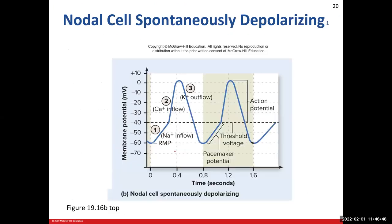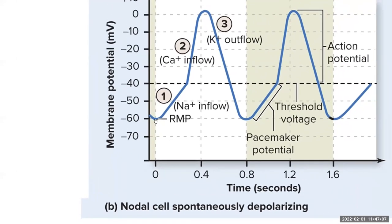When we graph out our nodal cells undergoing autorhythmicity — that spontaneous depolarization — here's what it looks like. Here's our resting membrane potential, and then those slow voltage-gated sodium channels open up, sodium flows in, we hit that threshold potential, and then calcium starts to flood into the cell through the fast voltage-gated calcium channels, shooting right up. We get to that zero value, then the calcium gates close and potassium moves out of the cell, returning us back down to our resting membrane potential just for a moment, and then those slow voltage-gated sodium channels open up again.